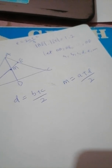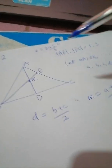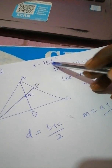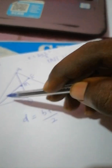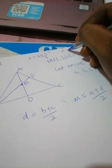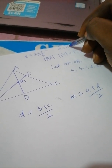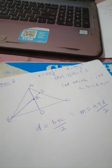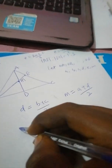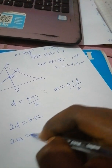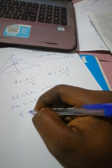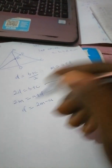We want to prove that E divides AC internally in a ratio of one to two, and that the same E divides line BM externally. From our two equations: 2d = b + c (equation one), and 2m = a + d (equation two). Since we are interested in variables a, c, m, and b, we eliminate d. From equation two, d = 2m − a. Substituting into equation one: 2(2m − a) = b + c, which gives 4m − 2a = b + c.